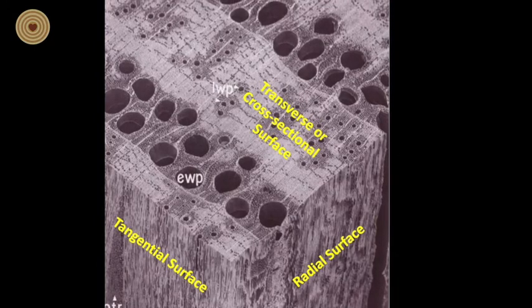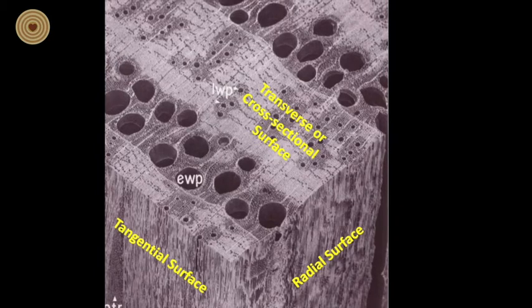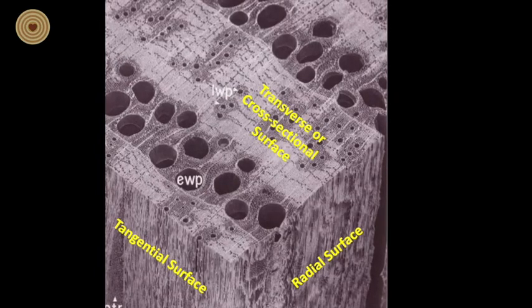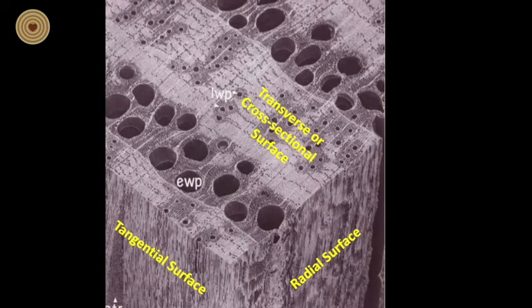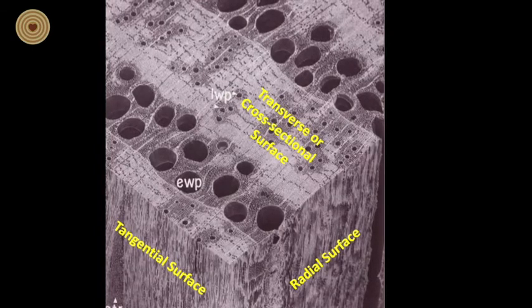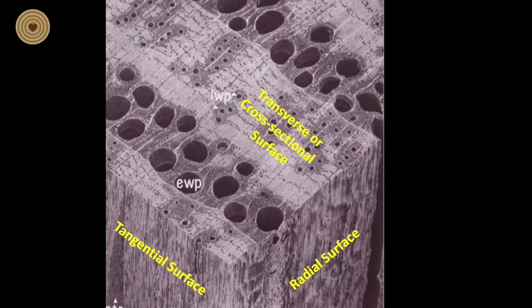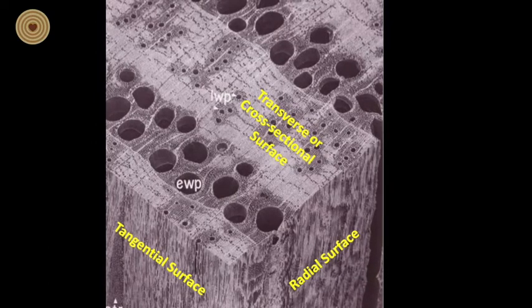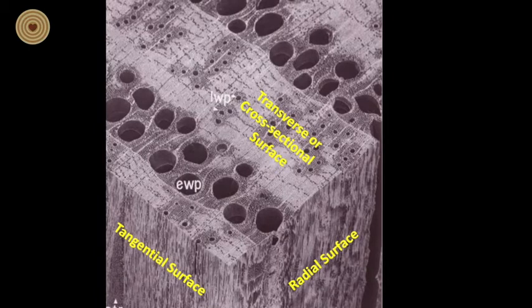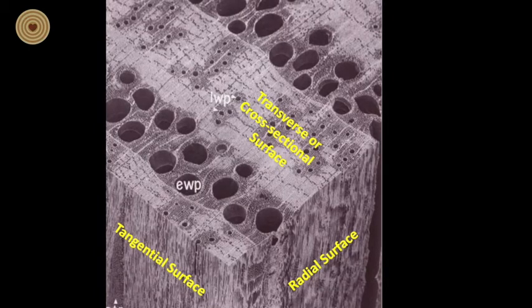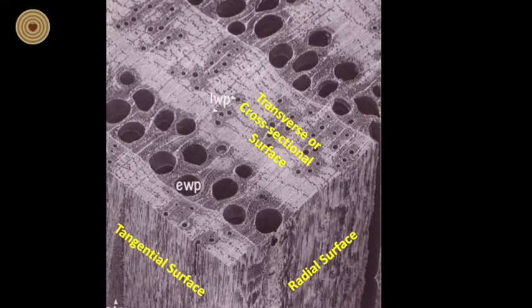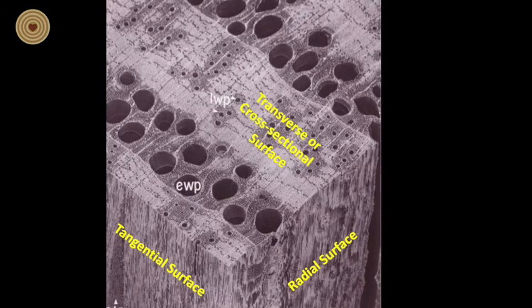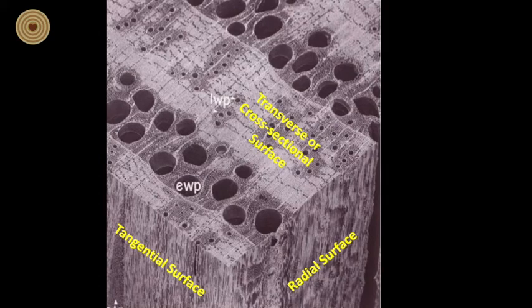On the end grain or cross-sectional surface of a hardwood, we often can see the cut ends of the vessels, which we more commonly just term the pores of the wood. In this image, we see pores labeled EWP for early wood pores and labeled LWP for late wood pores. If these pores are large enough, for example in the early wood of many oak species, we can see them with the naked eye.